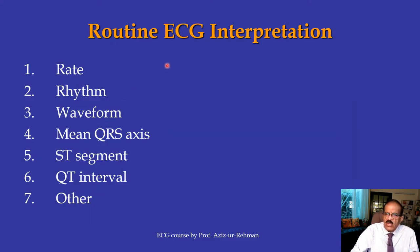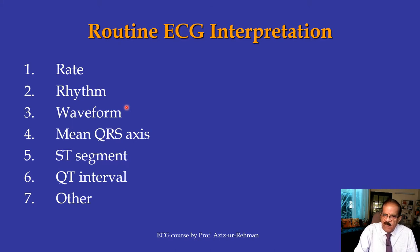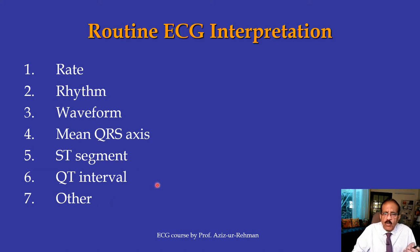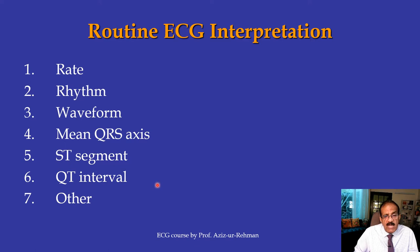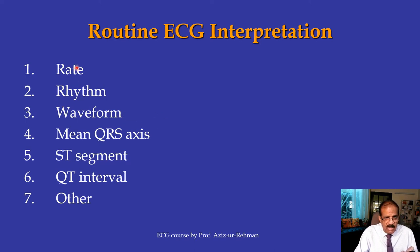This is the routine ECG interpretation checklist. When you see an ECG, first make sure it bears a label and is of good quality. Then study: rate, rhythm, waveform, mean QRS axis, ST segment, QT interval, and other features — one by one, in all leads. Once you know your material, most ECGs need one minute or less for a final diagnosis. There may be some that take a little more time, and some abnormalities you might never fully resolve — but most routine ECGs can be interpreted in just one minute.